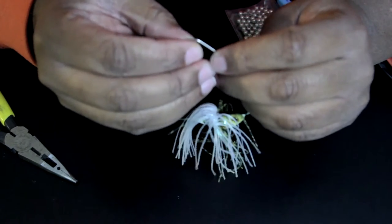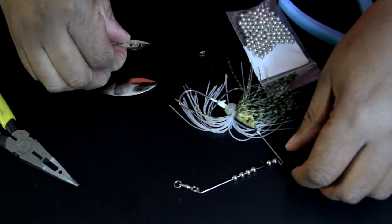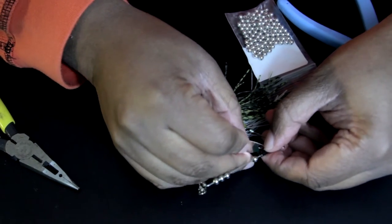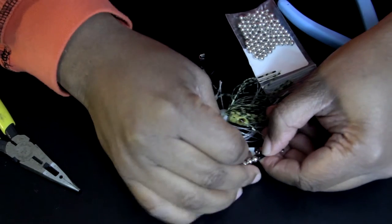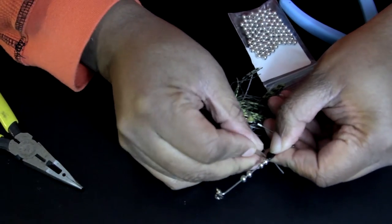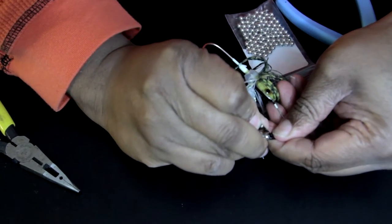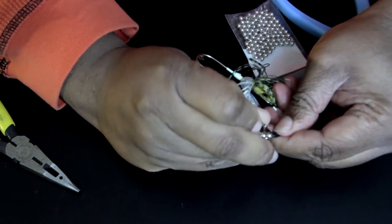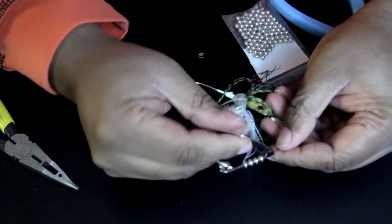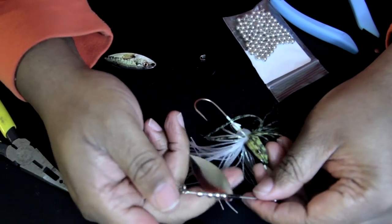And then what you're going to do is put your blades on. So I'm going to put my shiny blade on here first. I'm going to snap it on to the quick change clevis. Everything is so tiny. Okay. And you can see that's on there now.